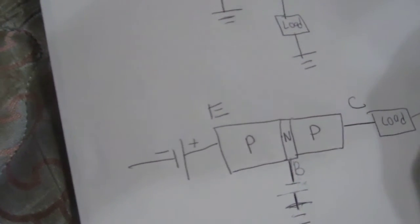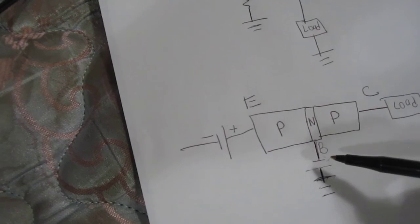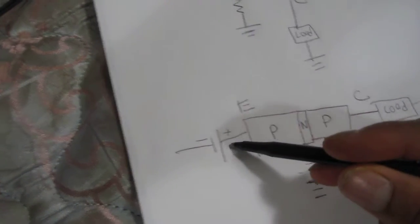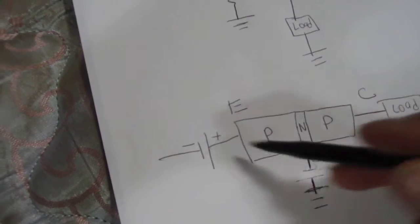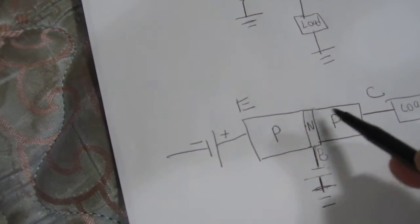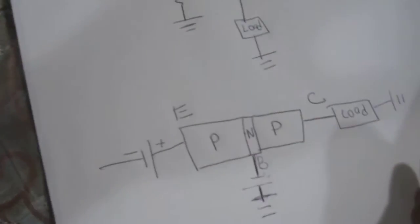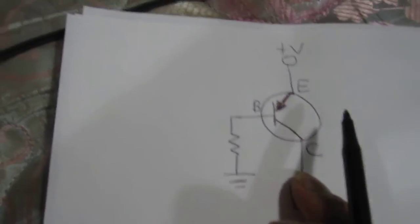This is how a PNP transistor works, how it's biased. You can see why you need a lower voltage than at the emitter terminal because you want to shrink this region. Then you put a voltage here which allows the holes to flow through, and when the region is shrinked, it's almost like it's non-existent, so that's why holes can then just flow through and power the load.